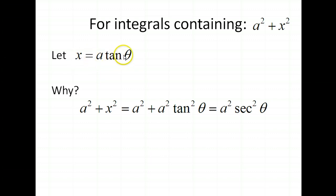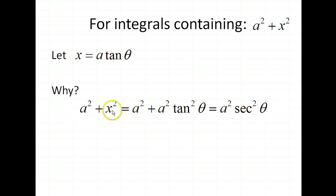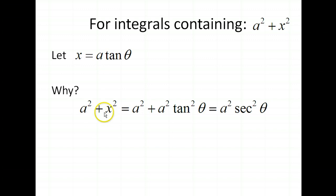We want to let x equal a tangent theta. It's going to come down to making use of the Pythagorean identity. When we have a squared plus x squared, that means we have a squared plus a squared tan squared theta. The a squareds can be factored out, leaving a squared times 1 plus tan squared theta. The Pythagorean identity allows 1 plus tan squared theta to be replaced with secant squared theta.